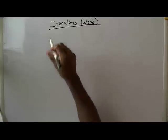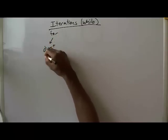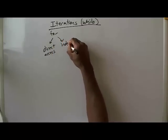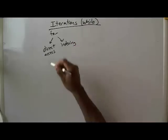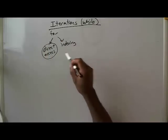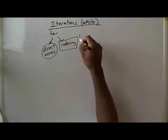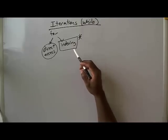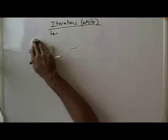Something interesting to note: with the for loop, if you recall, we had two styles — direct access as well as indexing. The for loop allows you direct access, which is an interesting feature of the for loop. The while loop does not. So with the while loop, what we're going to be using specifically is the indexing method — the same principles behind the indexing method that we use with the for loop.